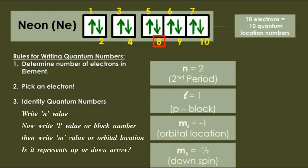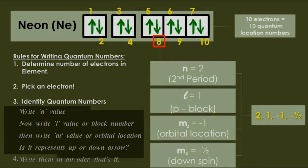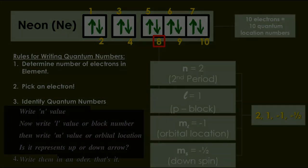Understand? Now write them in an order. That's it. Look here: n equal to 2, l equal to 1, m equal to minus 1, and s equal to minus 1 by 2, or we can say it as m_s. So all the values are 2, 1, minus 1, and minus 1 by 2. Like this we can write all the quantum numbers of any electron. Thank you.